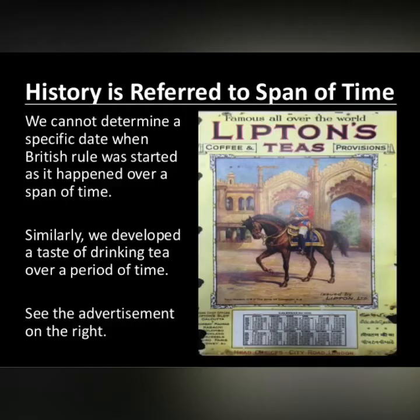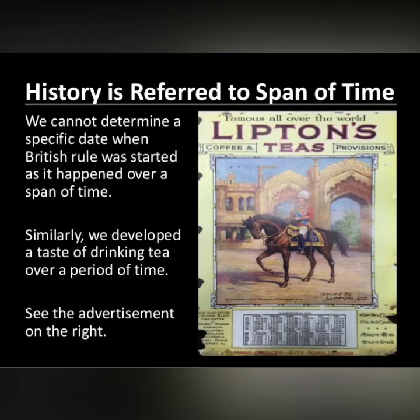Sometimes it is actually incorrect to fix precise dates to processes that happen over a period of time. People in India did not begin drinking tea on one fine day — they developed a taste for it over time. Likewise, we cannot determine a specific date when British rule started, as it happened over a span of time.